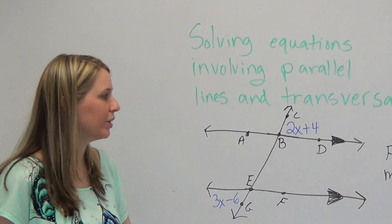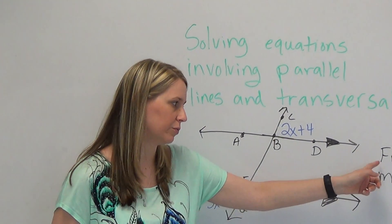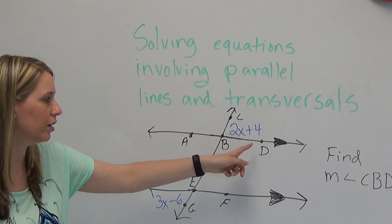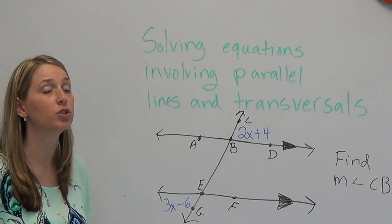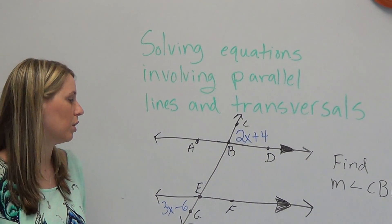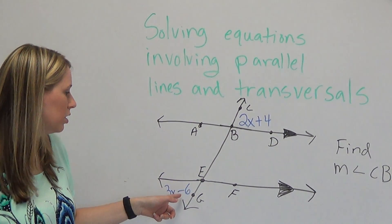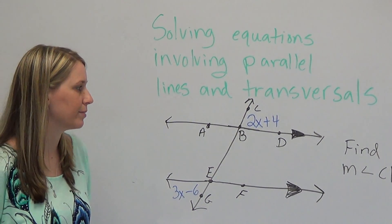So you see here we have a particular problem already set up and we want to find the measure of angle CBD. CBD is right here and it's represented by the expression 2x plus 4. You also have another expression down here for this particular angle and its expression is 3x minus 6.